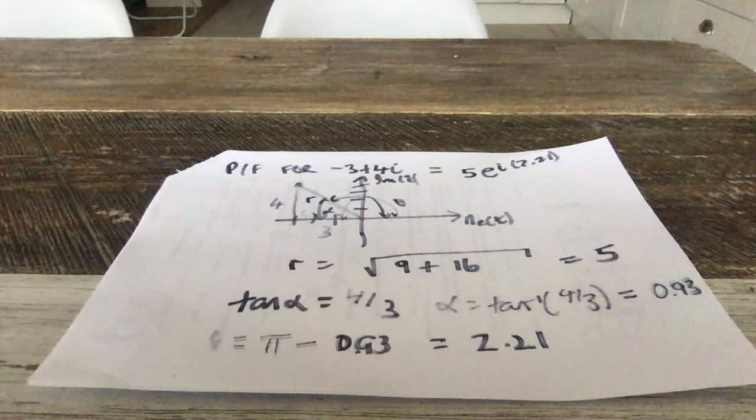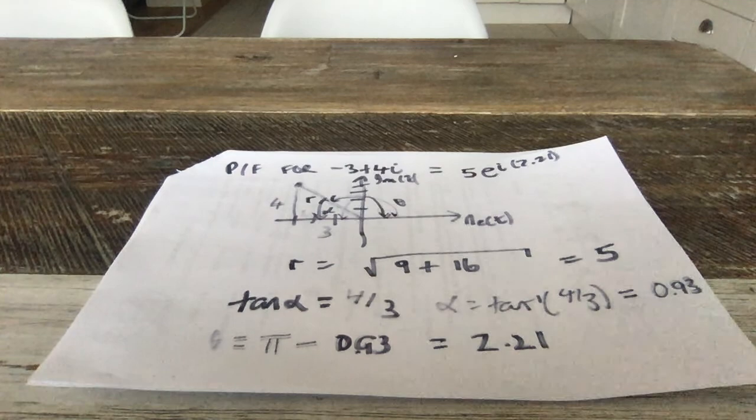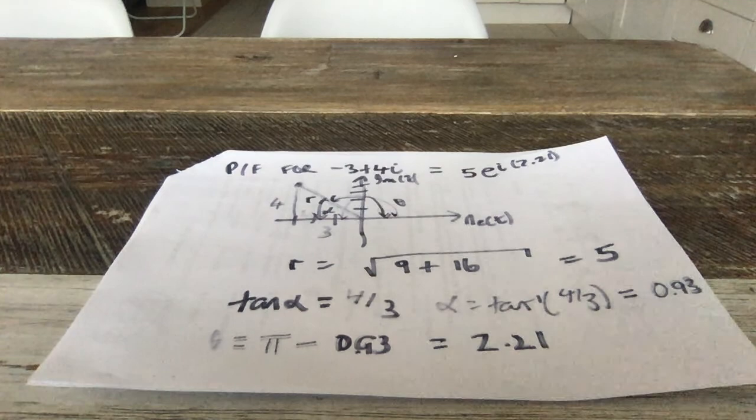When you look at this the first time, −3 + 4i and 5 e^(i·2.21) do not look equivalent at all — but they are. This is the magic of complex numbers. You could argue the Cartesian form is simpler in some ways, but not always — sometimes you actually want the polar form, which we'll see in the next part of the lecture.